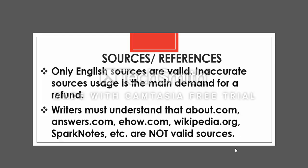Writers must understand that sites like about.com, answers.com, eHow.com, Wikipedia, SparkNotes, and similar sites are not valid sources. You should be using sources like Google Scholar, which contains peer-reviewed sources. Sites like Wikipedia allow anyone to edit information, so referencing them is very wrong. I will talk more about referencing in the next section.